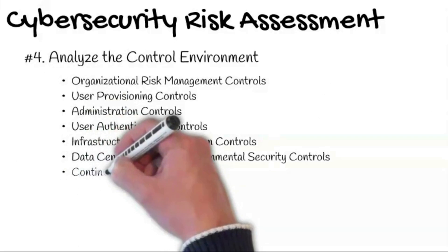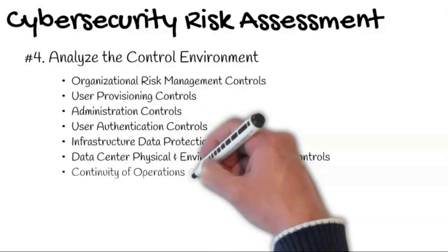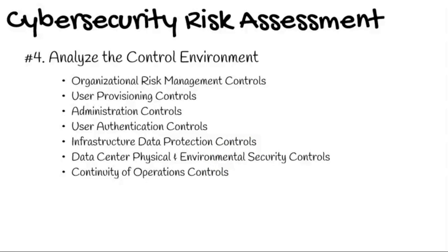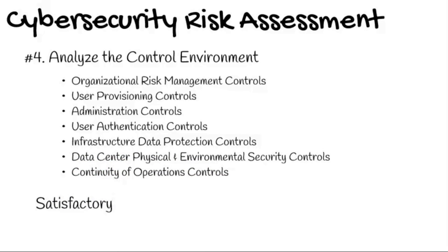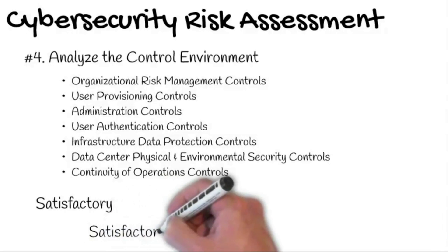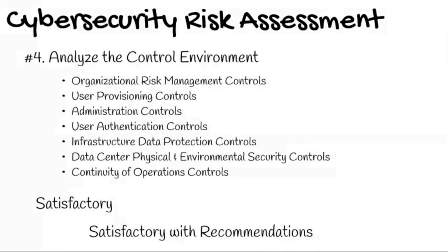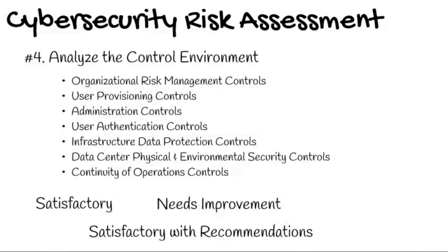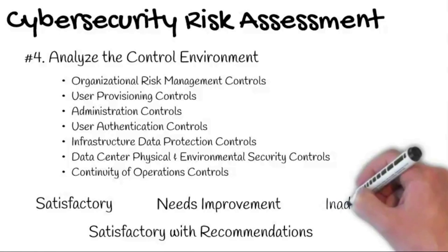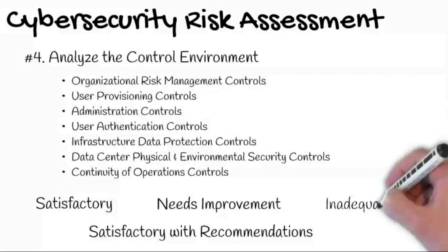Additional control categories include user authentication controls, infrastructure data protection controls, and data center physical and environmental security controls, as well as continuity of operations controls. Control assessment categories may be defined as: satisfactory — meets control objective criteria, policy, or regulatory requirements; satisfactory with recommendations — meets requirements with observations for additional enhancements; needs improvement — partially meets control objective criteria; or inadequate — does not meet control objective criteria, policy, or regulatory requirements.